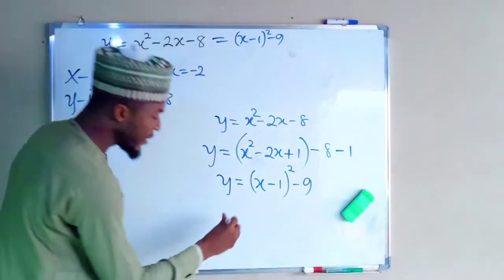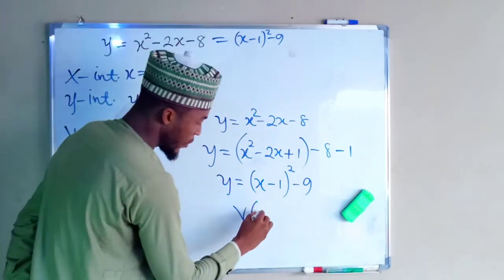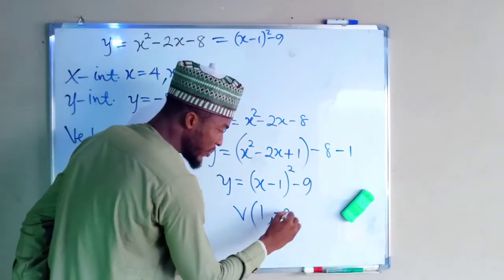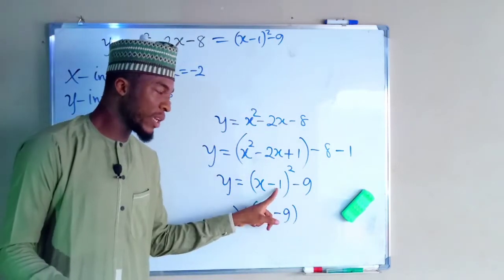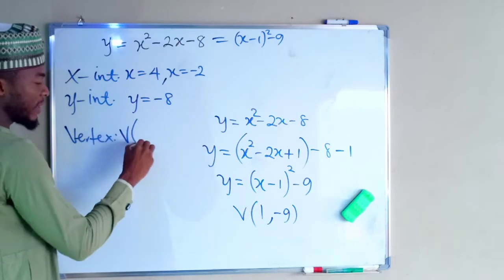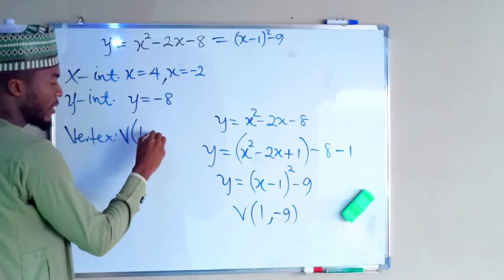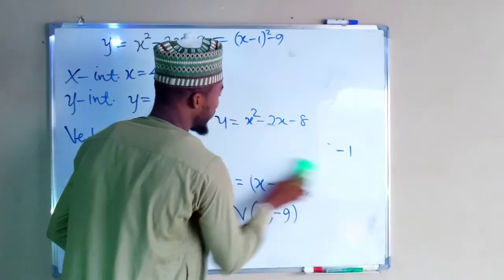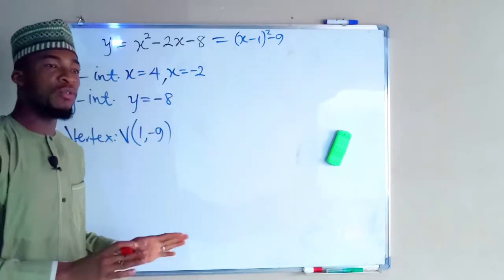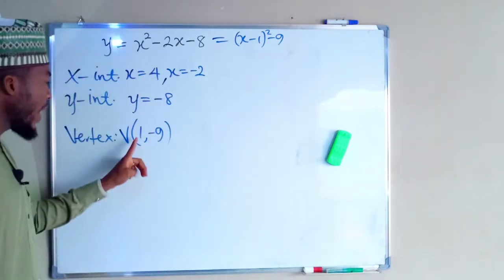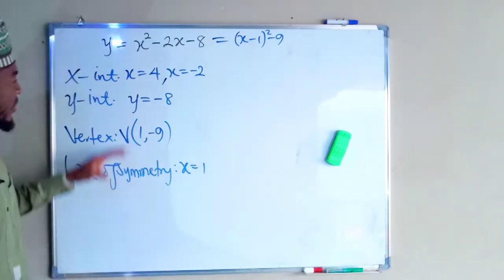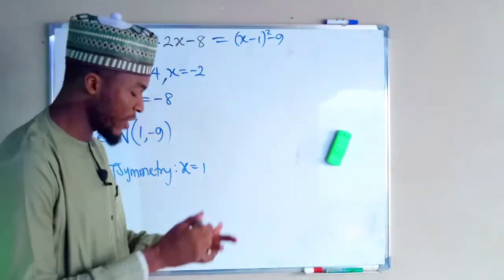So the vertex is at positive 1 for x and negative 9 for y — because when the expression inside is x minus 1, the x-value of the vertex is positive 1. So our vertex is (1, −9). What is left to find is the line of symmetry, which is the line that divides the parabola into two equal halves, and it is x equals 1. So these four points are enough for me to construct this quadratic graph.